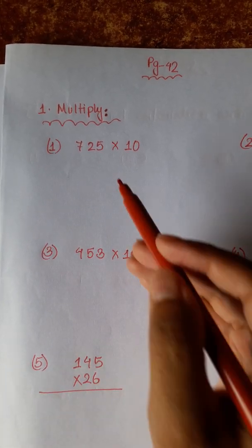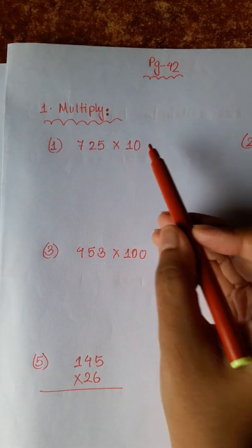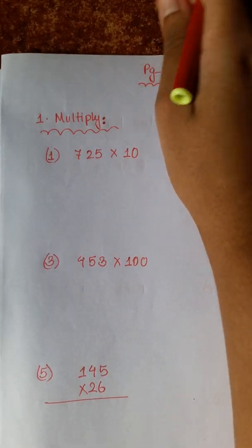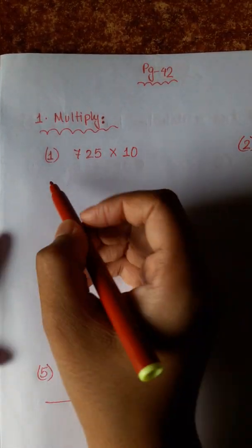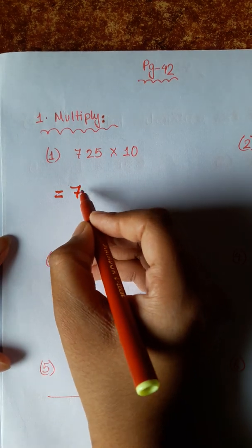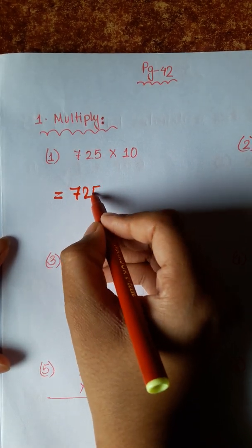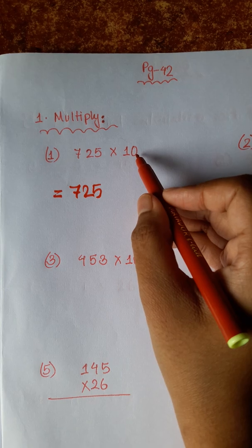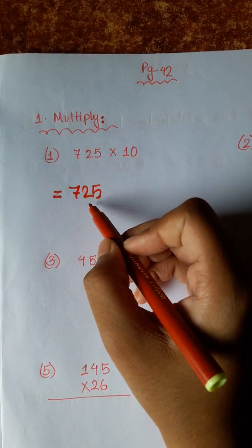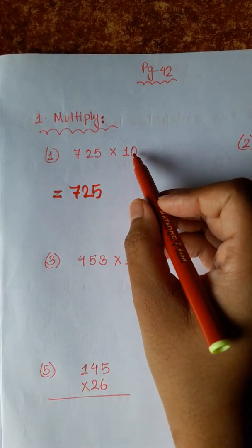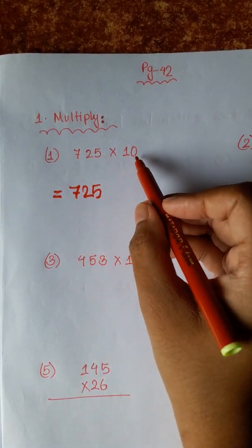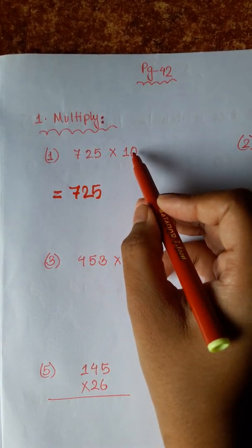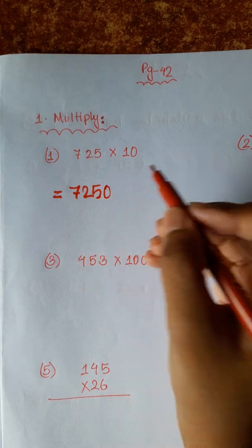Now we have vertically multiplied by 10 and 100. We have seen the multiplication in the previous video. 725 into 10 — we have counted 3 times into 10, check 1 plus, 1 plus, 5, 7. Now this is how we are familiar with this.